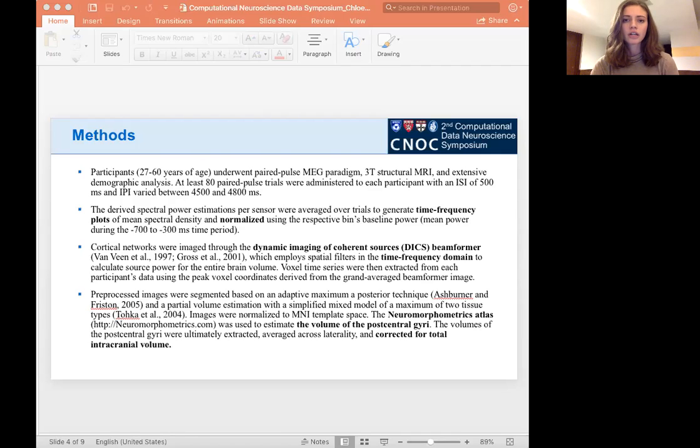From the artifact-corrected MEG pre-processed data, we derived spectral power estimations per sensor and averaged over trials to generate time frequency plots of mean spectral density. These were normalized using the respective bins baseline power from the negative 700 to negative 300 millisecond time window preceding stimulus onset. Cortical networks were imaged through the dynamic imaging of coherent sources or DICS beamformer. This technology employs spatial filters in the time frequency domain to calculate source power for the entire brain volume.